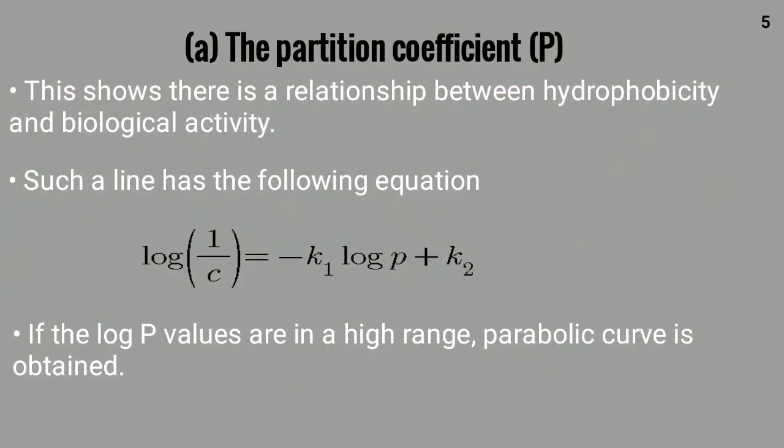This graph shows the relationship between hydrophobicity and biological activity. For the straight line, the equation is: log(1/C) = −K₁ log P + K₂. If the log P values are in a high range, we get a parabolic curve instead.